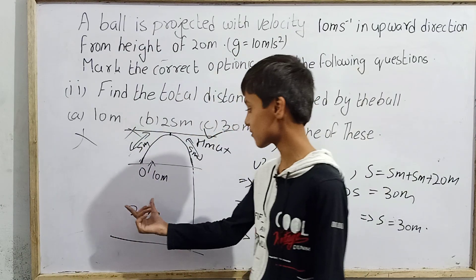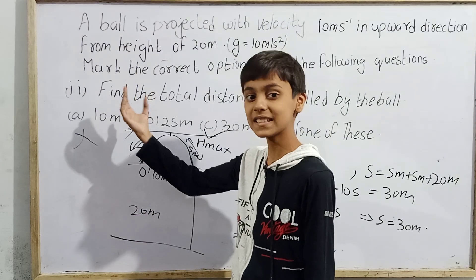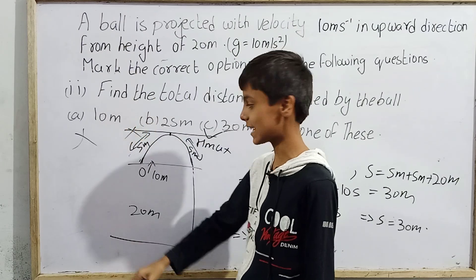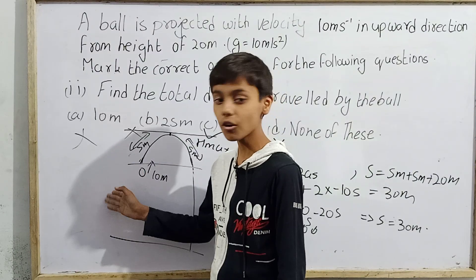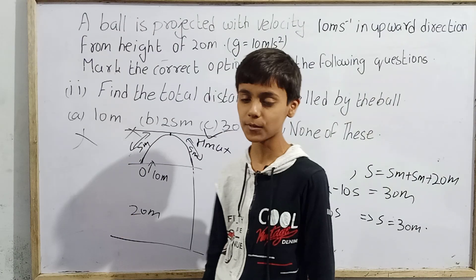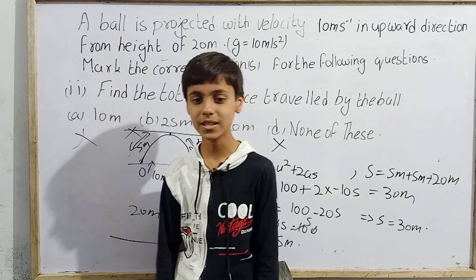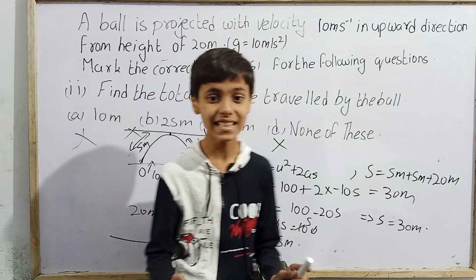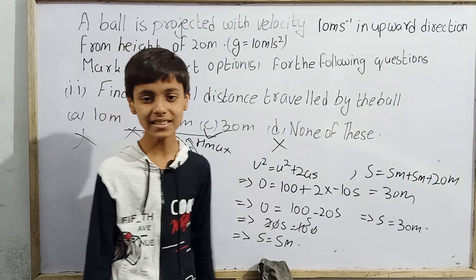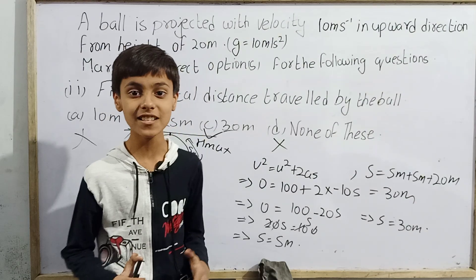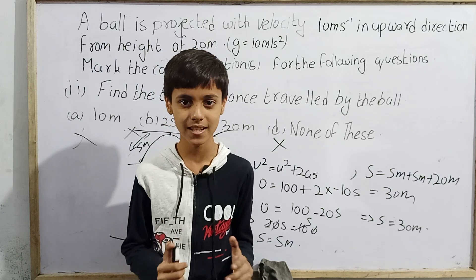In such a case where a ball is thrown upward with 10 meters per second from a height of 20 meters, reaches its maximum height and falls again, the total distance covered is 30 meters. This was today's topic based on kinematics questions for JEE Mains. Thanks.